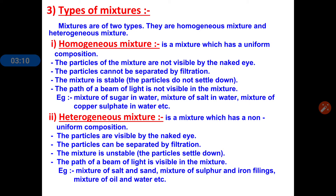The next type is a heterogeneous mixture. Heterogeneous mixture means different particles are present. The composition of particles is not uniform, and the particles are visible through the naked eye. In a heterogeneous mixture we can see the particles with our naked eyes, and we can also separate these particles by the filtration method.